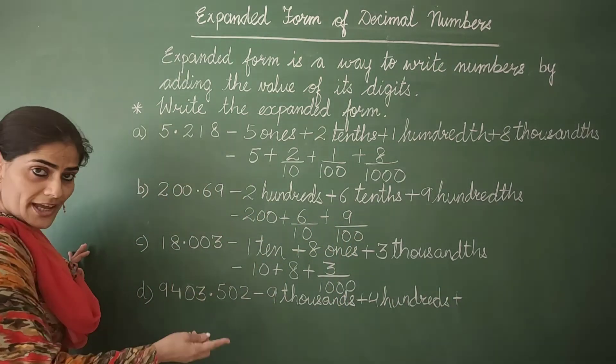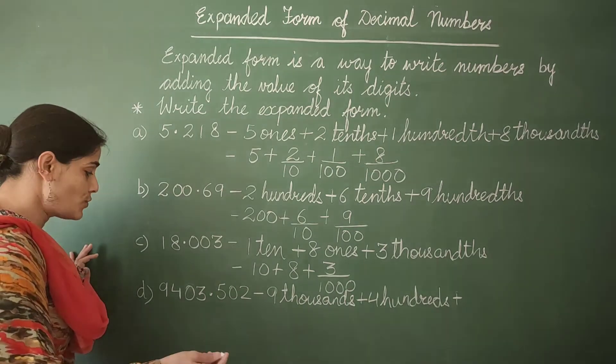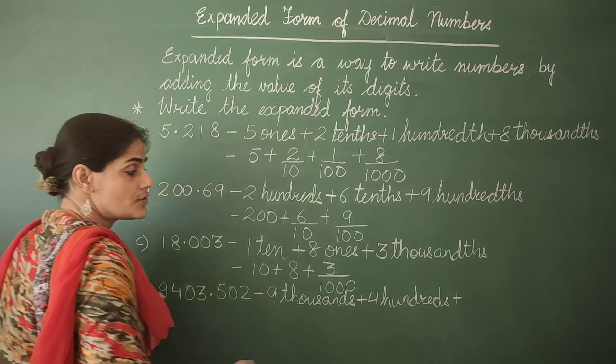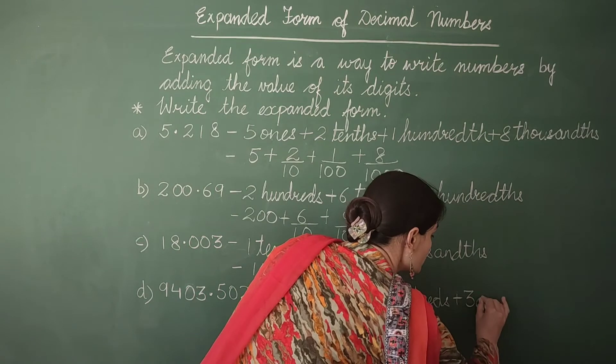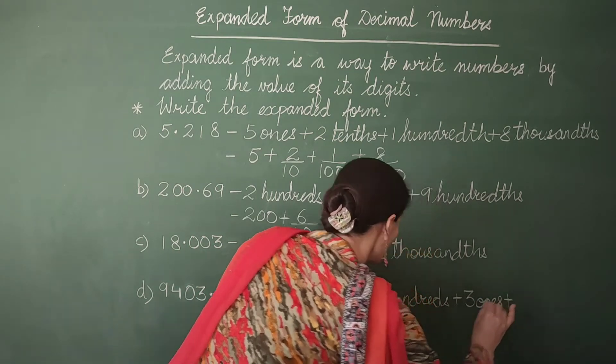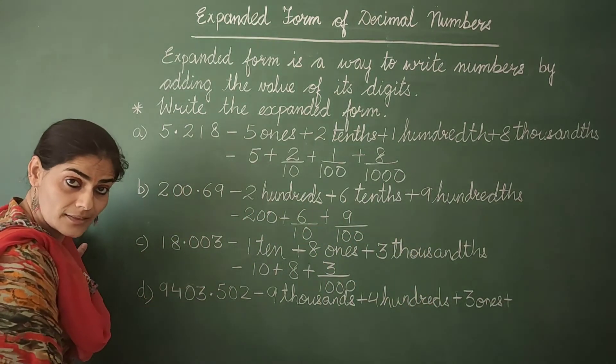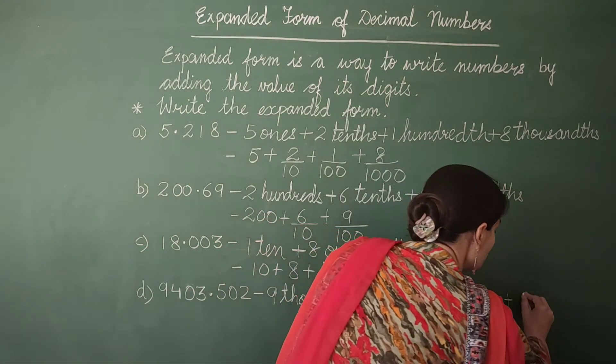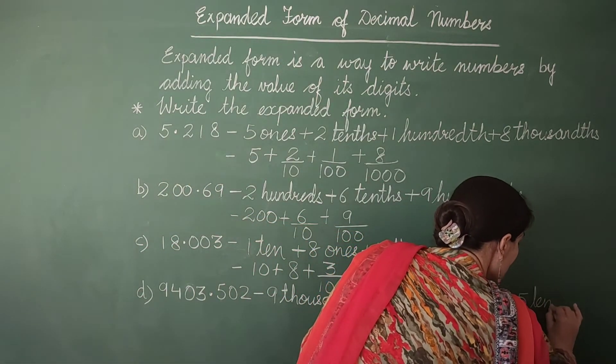Then it is 0 tens. So you don't need to write if you don't want to. Plus 3 ones. Plus 5 tenths. So I write here 5 tenths.